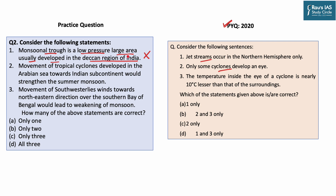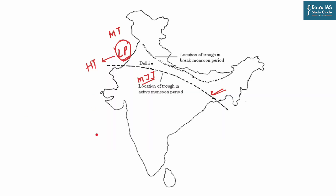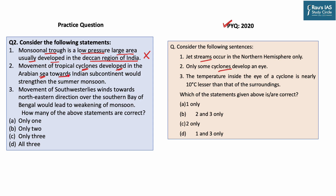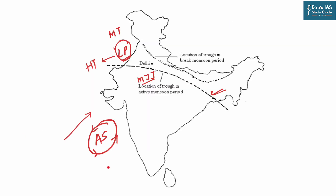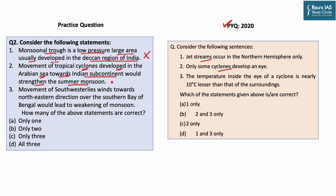The second statement says that movement of tropical cyclones developed in the Arabian Sea — if any cyclone develops there, it moves anticlockwise. If a cyclone developed in the Arabian Sea moves towards the Indian subcontinent, it would strengthen the summer monsoon. If this cyclone moves along with the southwest winds and enters the Indian subcontinent, it is bringing high moisture, so it is going to strengthen the summer monsoon. So the second statement is correct.